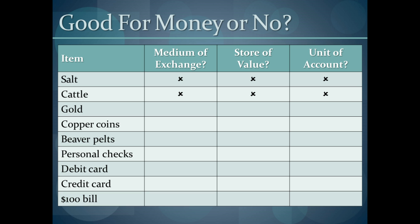Cattle falls in the same category. People used to use cows in the past, but are they a medium of exchange today? No. Are they a good store of value? No — cows die. And is it a unit of account? Again, no. Nothing is expressed in terms of the number of cows necessary to purchase something. So cattle doesn't count as money.